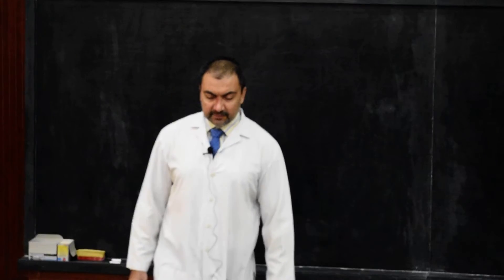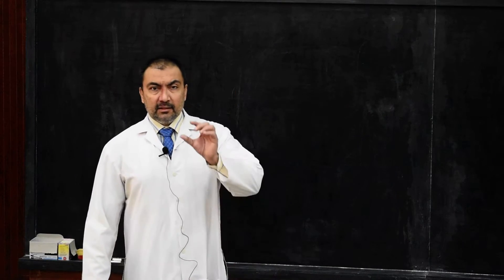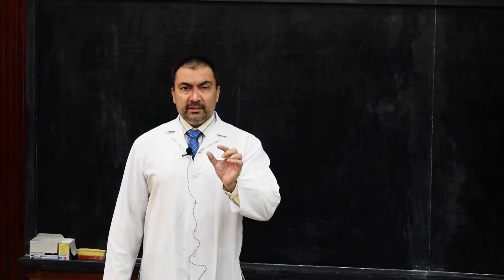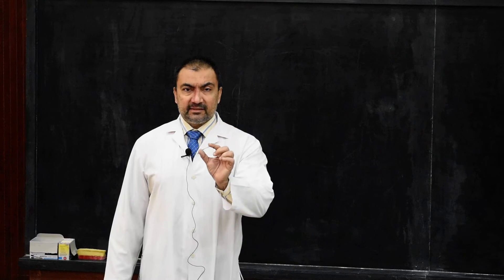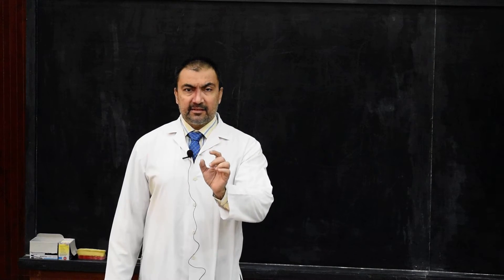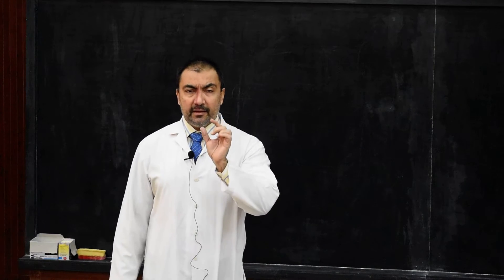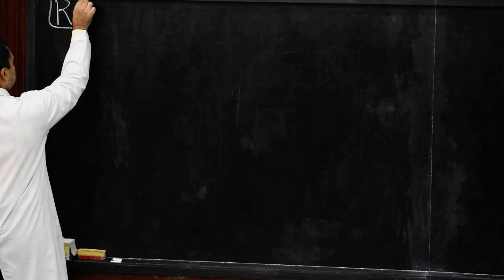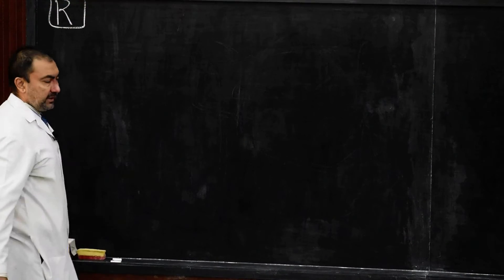Good morning students. Here we start with the relations of the shoulder joint, the bursae of the shoulder joint, arterial supply and nerve supply. First of all, we shall discuss the relations of the shoulder joint.